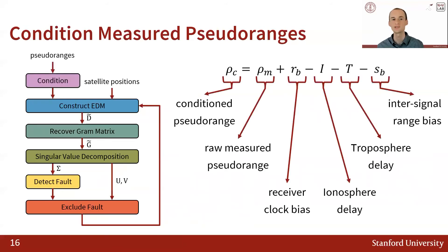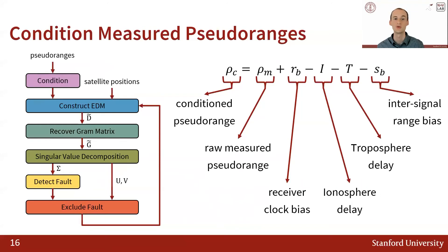The additional step that needs to take place for real-world implementations is to condition the raw measured pseudoranges by removing biases. EDM-based FDE is essentially fitting distances between point locations, so it works most accurately when those distances are as close to their truth values as possible. In the results shown, we estimated the receiver clock bias as a state in an extended Kalman filter, and atmospheric and inter-signal biases were provided in the datasets themselves.